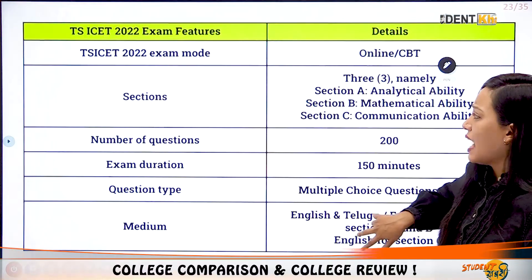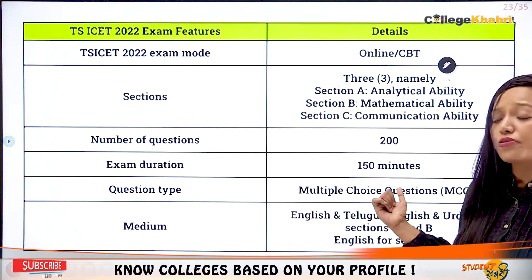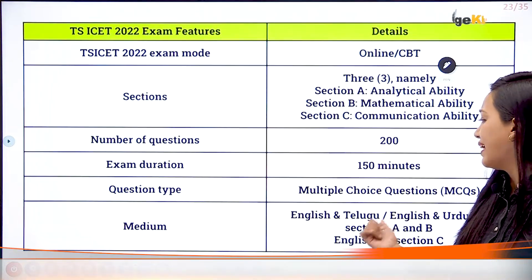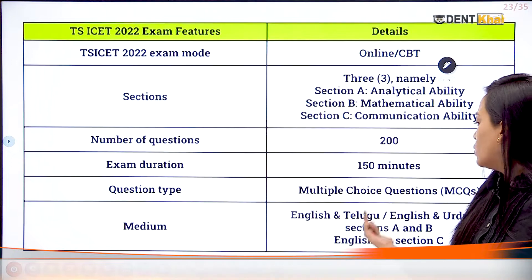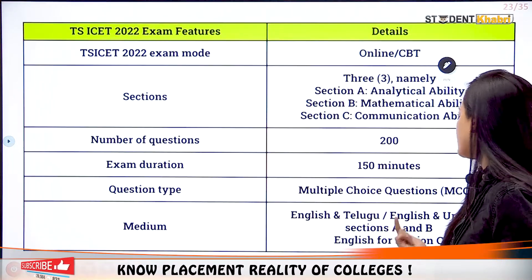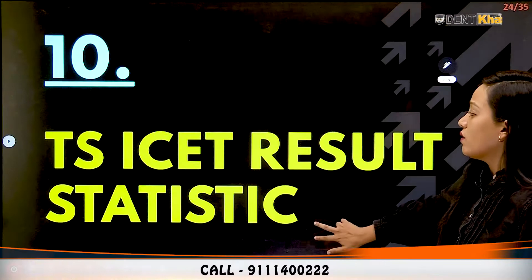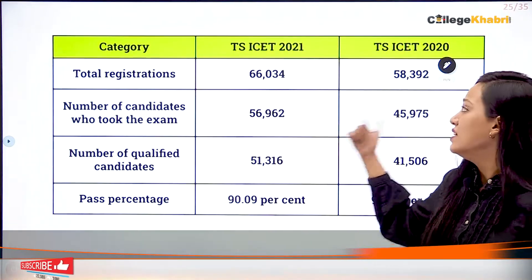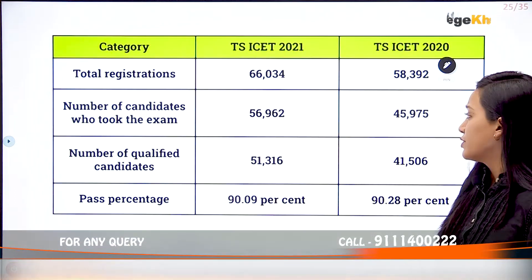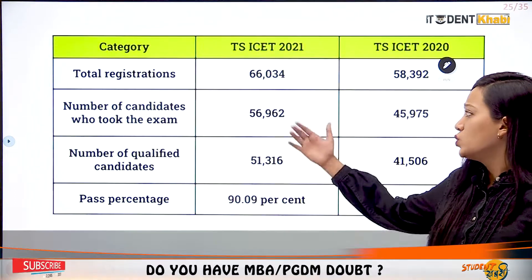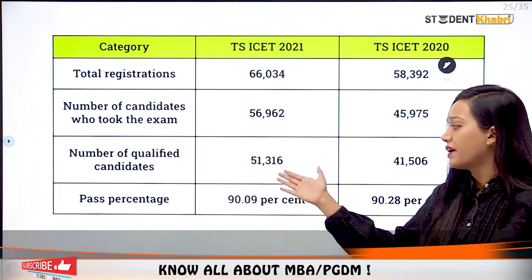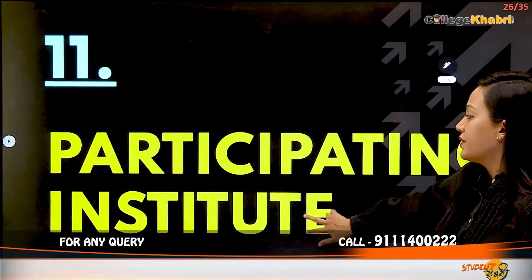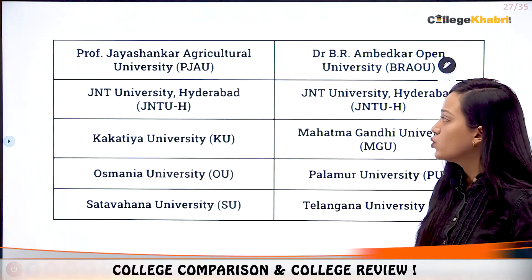The exam pattern has three sections with 200 questions and a duration of 150 minutes, all multiple choice. The medium is Telugu and English for sections A and B, and English for section C. Looking at the result statistics from last year: 66,000 students registered, 56,000 took the exam, approximately 51,000 qualified, and the pass percentage was around 90 percent.